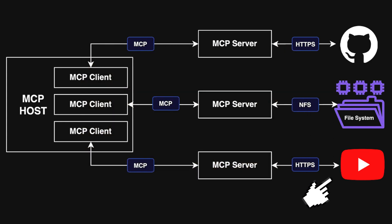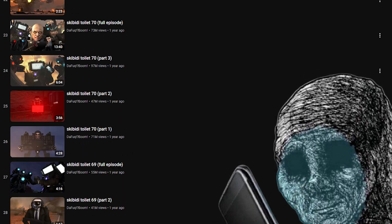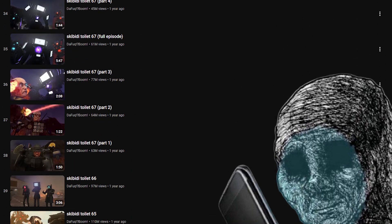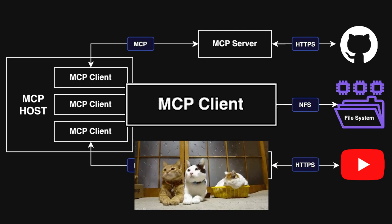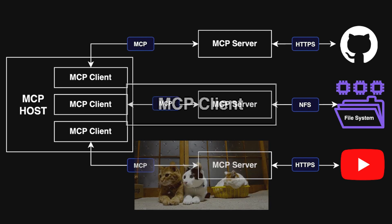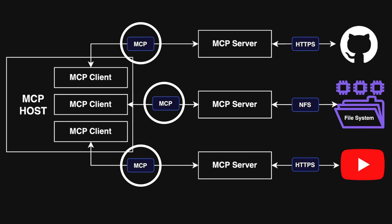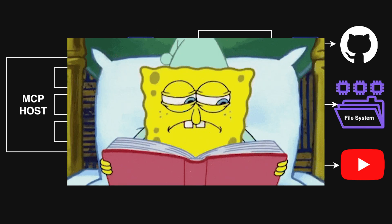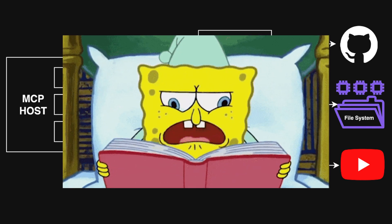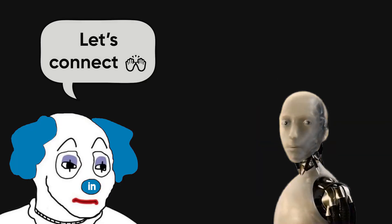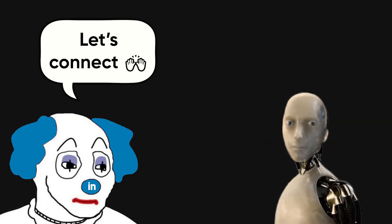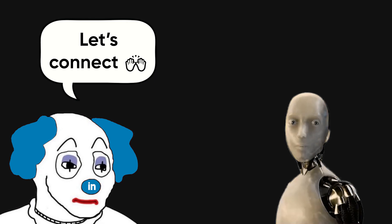Even a YouTube server could watch a whole video series and summarize it for you. Sitting in the middle is the MCP client, which handles all the back and forth between the AI and those servers. Keeping it all in sync is the protocol itself — a shared rulebook built on structured formats like JSON, so every request and response stays clean. Thanks to that, an AI can connect with a brand new tool it's never seen before and still understand how to use it.